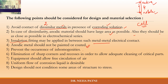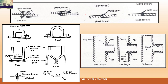Prevent the occurrence of heterogeneities in the metal, as discussed in dry and wet corrosion. Eliminate sharp corners and recesses to allow adequate cleaning of critical parts. The equipment should allow free circulation of air, uniform flow of corrosion liquid is desirable, and the design should not subject certain areas or structures to stress — as stress is the first condition for stress corrosion.